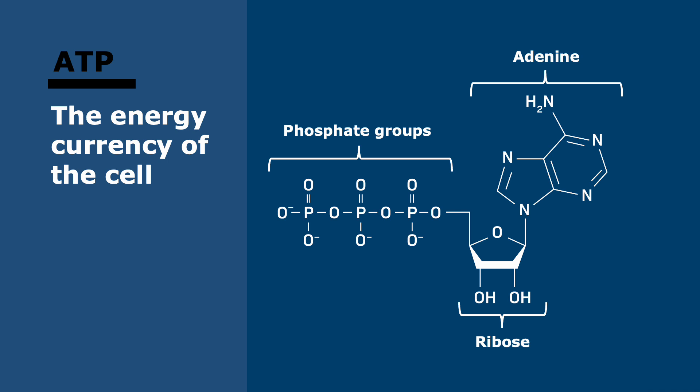So, what makes ATP suitable for this role? Well, first of all, it's soluble in water, so it can move through the cytoplasm. It's stable at neutral pH, which is the pH in the cytoplasm, and it cannot move through the phospholipid bilayer, so its movement can be controlled using pumps.